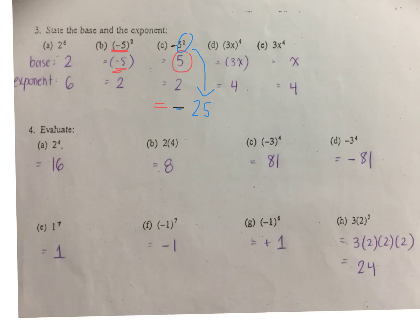For the last one, e, this is similar to what we just talked about. The power is x to the power of 4. It's x to the power of 4 multiplied by 3 — there's no bracket there.